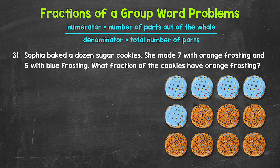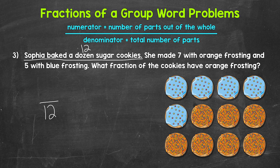Let's move on to number three. Sophia baked a dozen sugar cookies — and remember, a dozen means 12. She made seven with orange frosting and five with blue frosting. What fraction of the cookies have orange frosting? Let's start with the denominator. Sophia baked a dozen sugar cookies, and a dozen is 12, so 12 is our denominator.